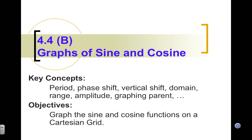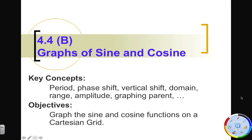Welcome to Part B of 4.4. This is graphing sine and cosine. Basically what we're going to be looking at is just examples of graphing sine and cosine using all four values: A, B, C, and D. So we're going to be doing phase shifts and amplitudes and vertical shifts, all that sort of fun stuff.